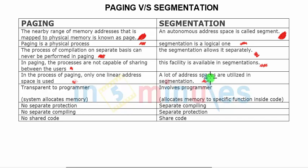When it comes to the programmer, paging is practically transparent because the user does not do much. Only during storage and access is paging internally handled by the OS. But segmentation involves the programmer, because which segment should go where and what the content of a particular segment is needs to be understood.